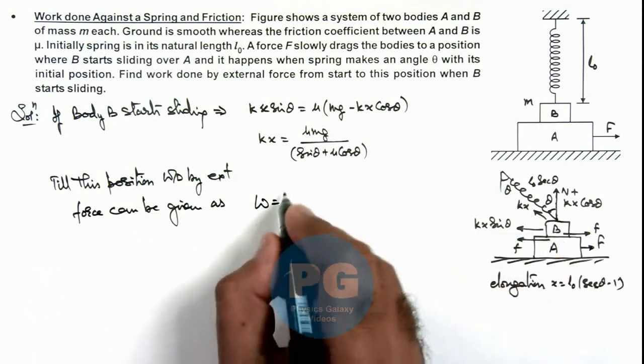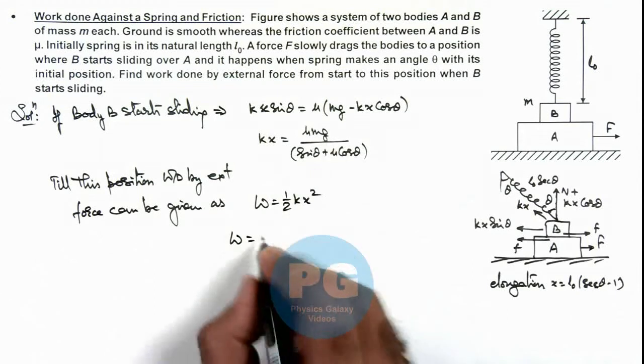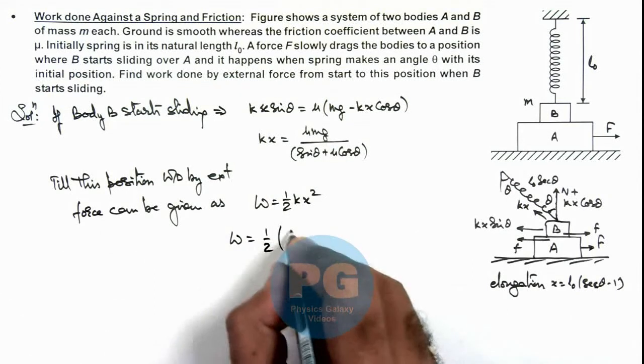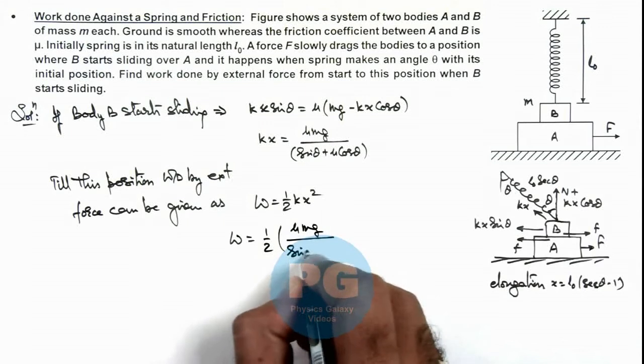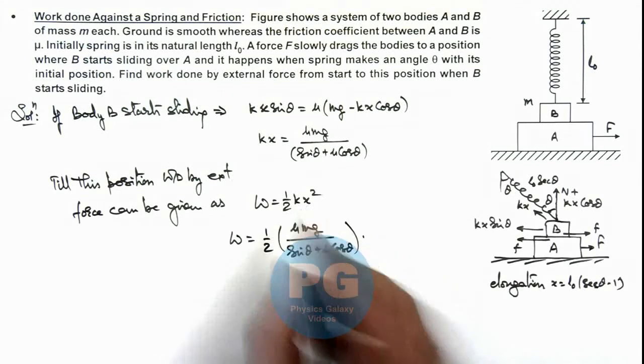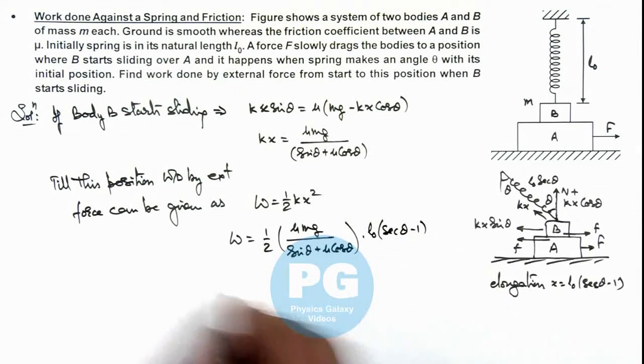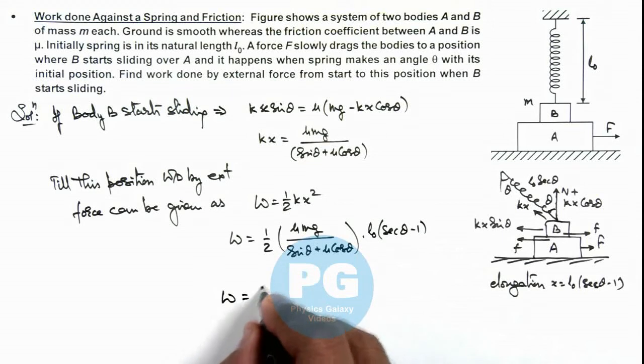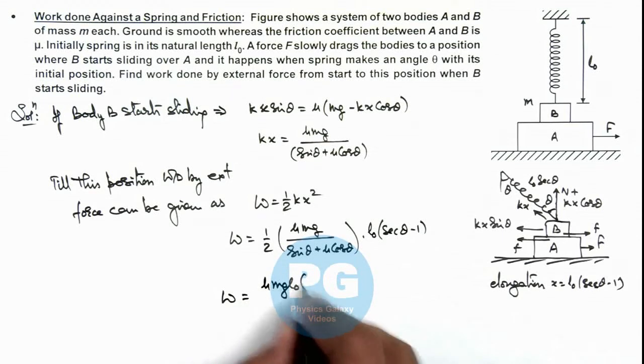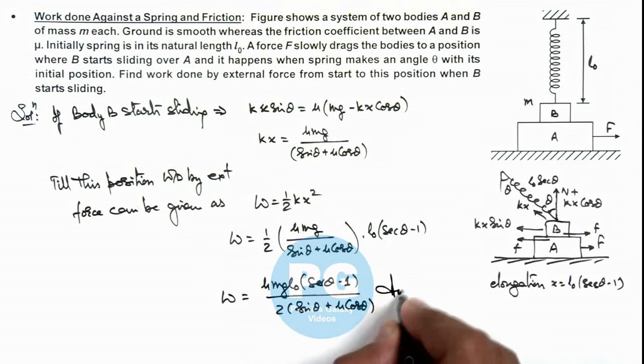This can be calculated as the energy gained by the spring which is ½kx², where the value of kx we can substitute as μmg/(sin θ + μ cos θ), and multiplied by x we can write as L₀(sec θ - 1). So this is the final result of the problem, that is μmgL₀(sec θ - 1) divided by twice of (sin θ + μ cos θ). That is the final result of this problem.